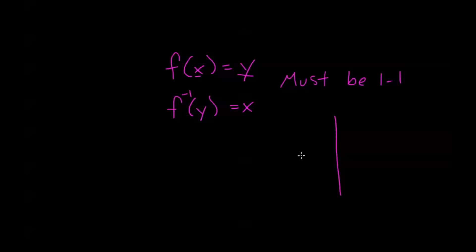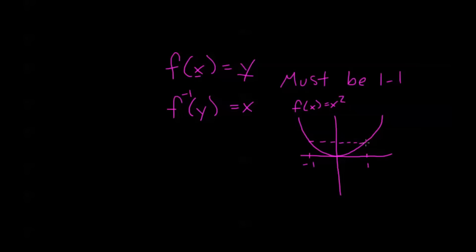Let me give you an example of a function that's not 1 to 1, and that is x squared. If I look at x equals negative 1 and x equals positive 1, these both give an x squared value of 1. So if I have f inverse of this function, how would I know what I'm plugging in? If I looked at f inverse of 1, does this equal 1 or negative 1? It has multiple possible values.